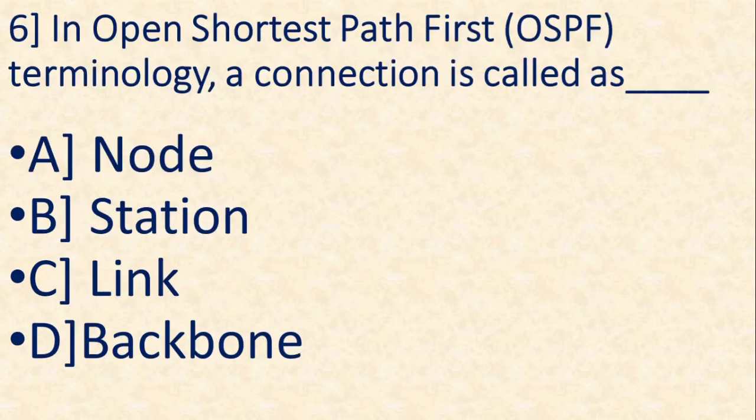Question number 5. In open shortest path first, that is OSPF, terminology, a connection is called as, A, node, B, station, C, link, D, backbone. And the answer is C, link.